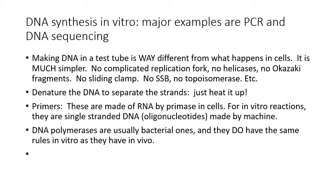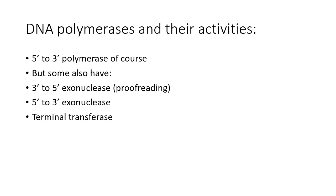We will use DNA polymerases — usually bacterial ones — but they have the same rules for polarity and nucleotides that they would have in vivo. The defining characteristic of DNA polymerases is that they have 5' to 3' polymerase activity, which means they move along a template, adding on to 3' ends and extending from their own 5' end toward the 3' end. All polymerases have that. But polymerases differ in terms of other activities they have.